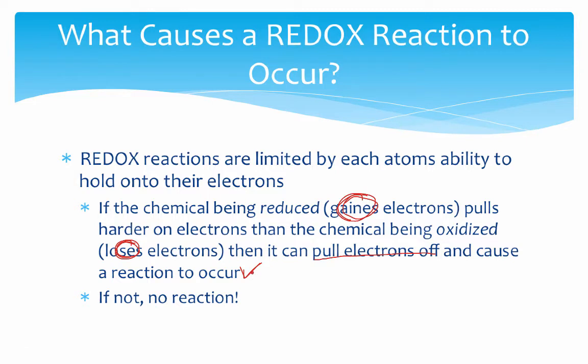If that cannot happen, if this pull by the reducing substance is not great enough, then as a result of that, no reaction will occur because neither atom has the ability to take electrons off of the other one, which again, if you recall, is the driving force behind a redox reaction.